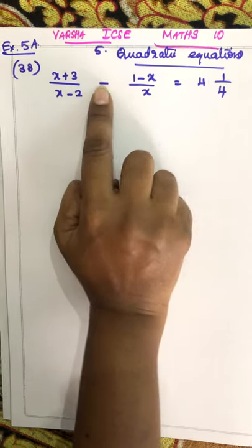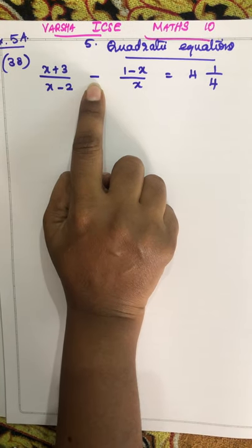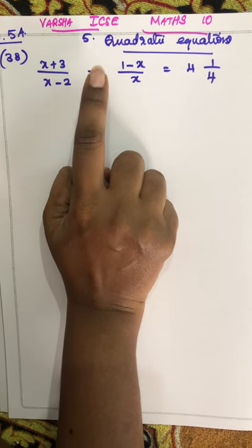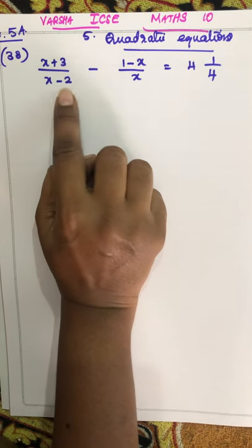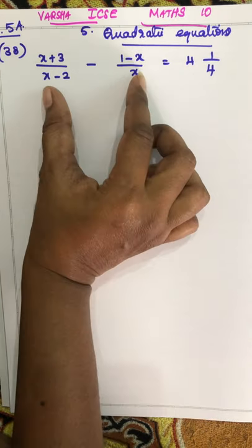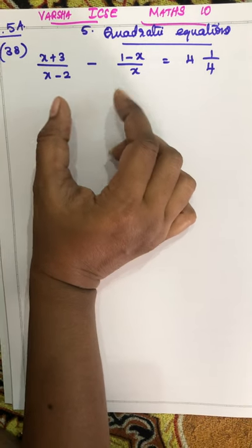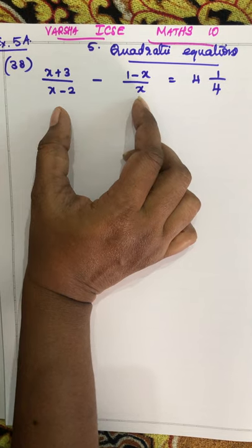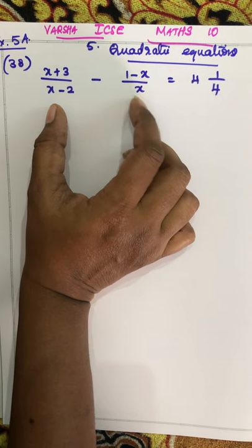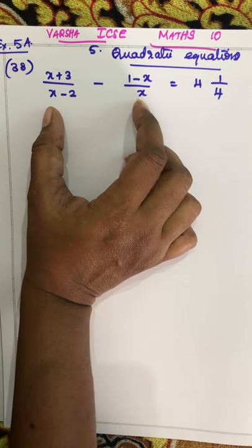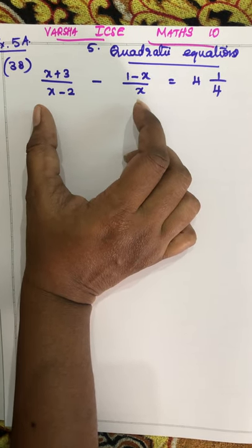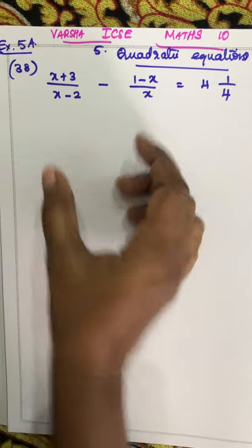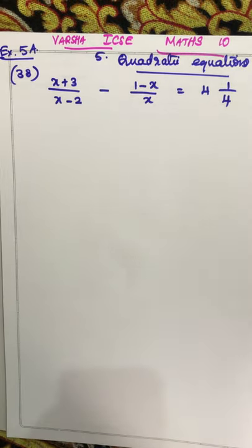See students, here you have a minus sign. So, whenever you have plus or minus, you can cross multiply or you have to equalize the denominator. You can do either the LCM method or cross multiplication — you can do any of the methods.